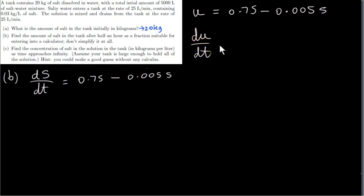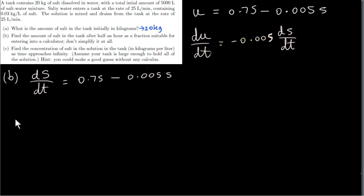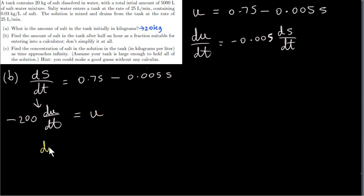We get du/dt equals the derivative of 0.75, which is 0. The derivative of this term is minus 0.005 multiplied by ds/dt. So now I can replace ds/dt with du/dt divided by minus 0.005, which gives us minus 200 du/dt. So we replace ds/dt and replace the right hand side with u, and our differential equation becomes du/dt equals minus 0.005 times u.